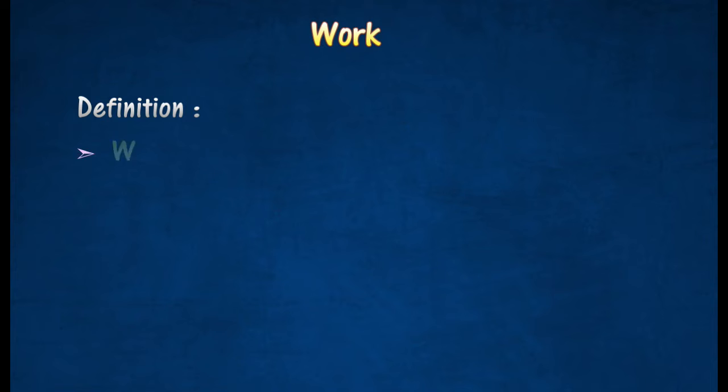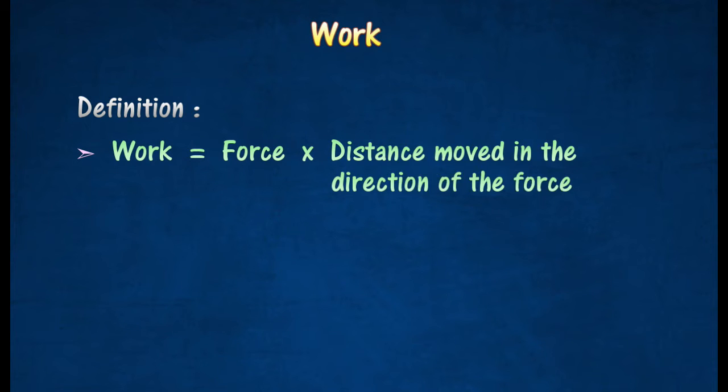Work is defined as the product of the applied force and the distance moved in the direction of the force. Hence, work done is the force F that acts on an object causing the object to move through a distance S in the direction of the force.